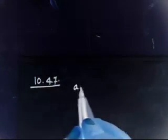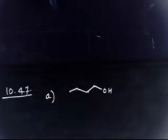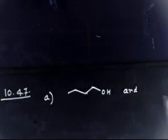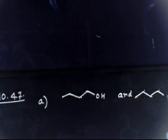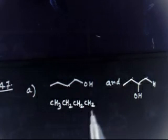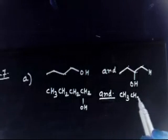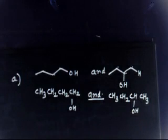First, we have 1-butanol: CH₃CH₂CH₂CH₂OH. And we have 2-butanol: CH₃CH₂CH(OH)CH₃. How will you differentiate between these two compounds? What kind of reaction will you use to differentiate these two alcohols?